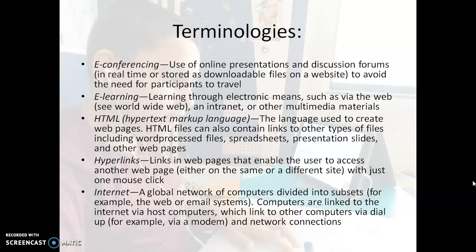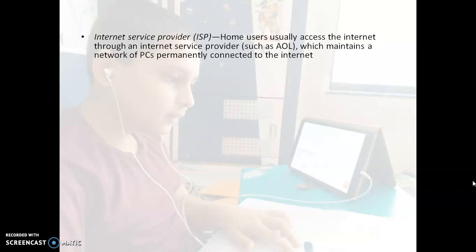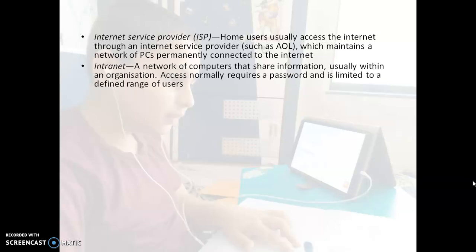Hyperlinks take you from one page to another, and that is why they are called hyperlinks. Next is internet — it is a very common term. Without internet, we will be handicapped now. Next term is ISP, internet service provider. To access the internet, we have to have some ISP or internet service provider. Then there is intranet — there are computers in an institution which are connected with each other. It is called intranet: a network of computers that share information within an organization.